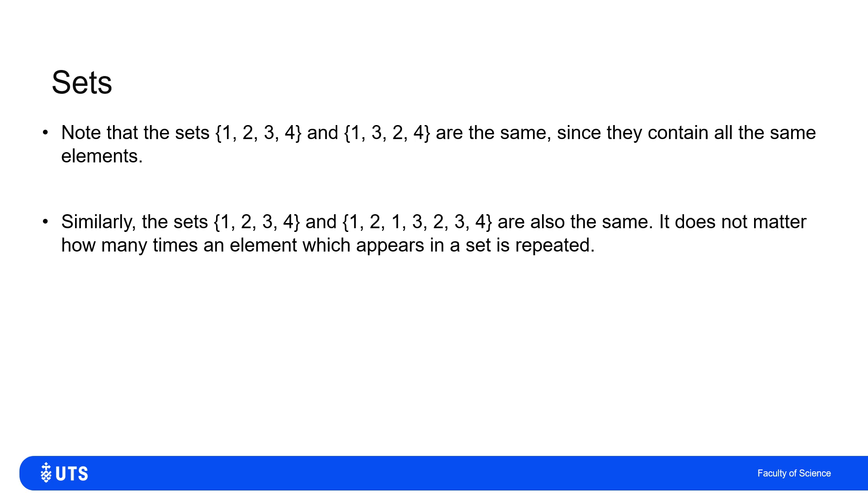Also, a set is defined by the number of distinct, so non-repeat elements. So the set {1, 2, 3, 4} is the same as the set {1, 2, 1, 3, 2, 3, 4}, because both of those two sets only have elements 1, 2, 3, and 4.